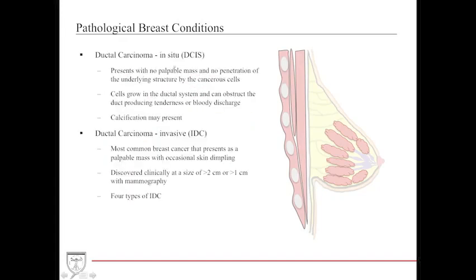Ductal carcinoma can be in situ — where it stays put and does not move — or invasive, where it breaks through the basement membrane and has a propensity to migrate. Ductal carcinoma in situ presents usually with no palpable mass and no penetration of underlying structures. Cells grow in the ductal systems and can obstruct the duct, producing tenderness or bloody discharge, which can be confused with intraductal papilloma. These can also present with calcifications picked up on mammography.